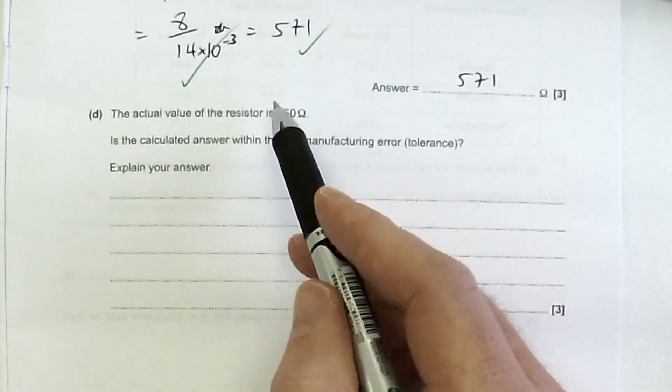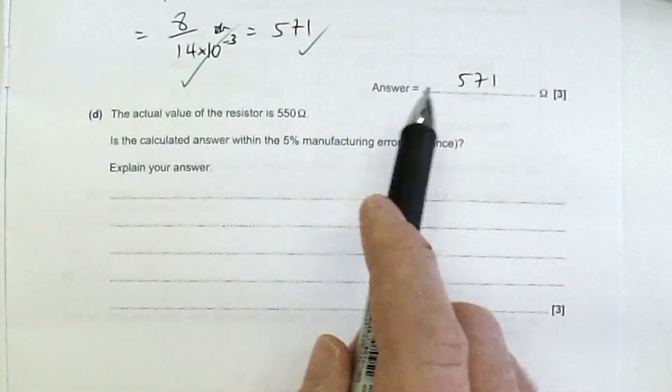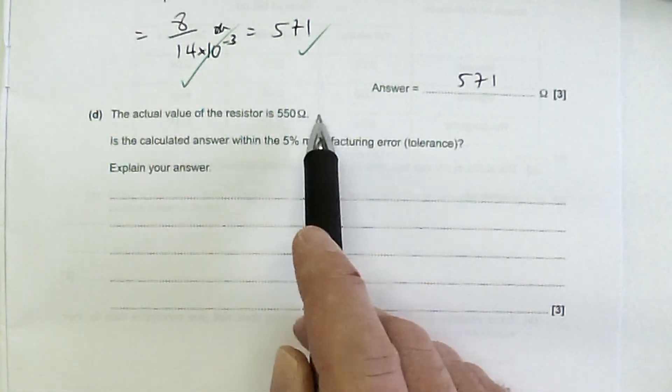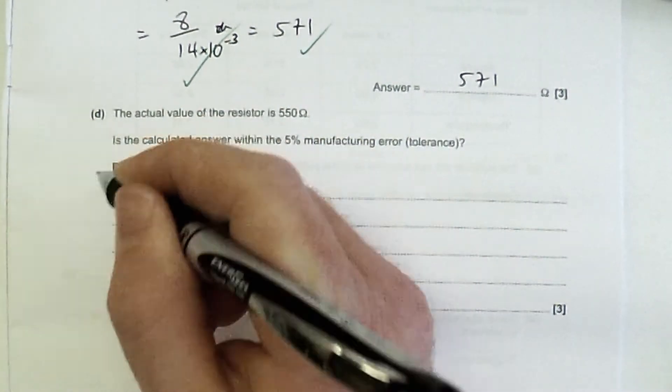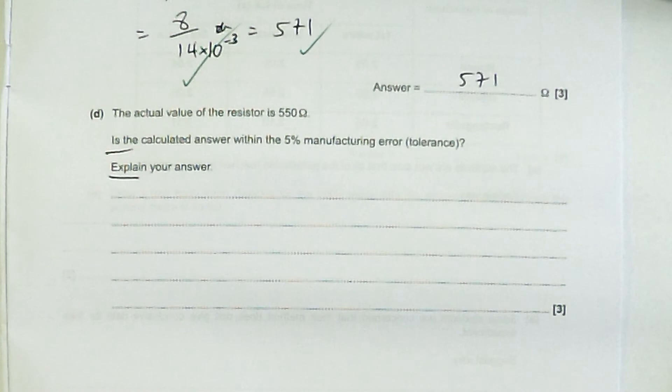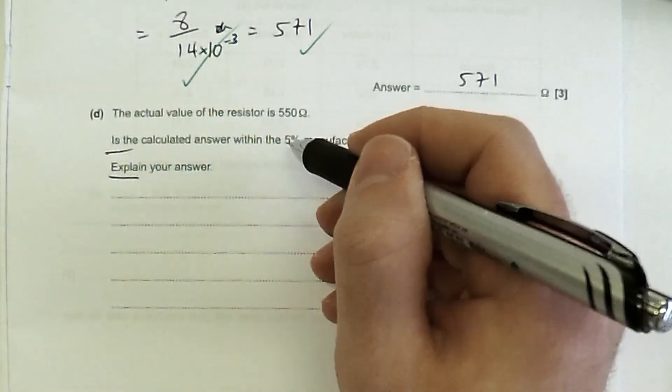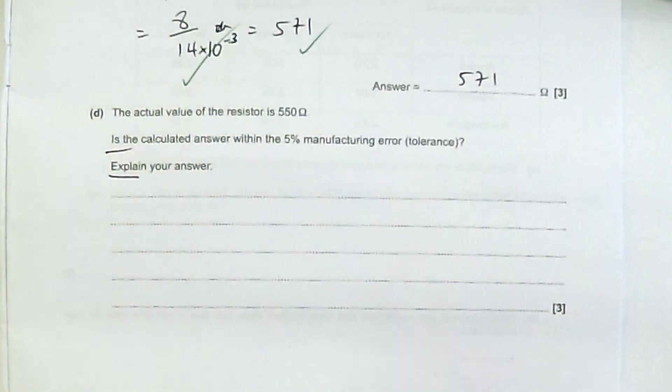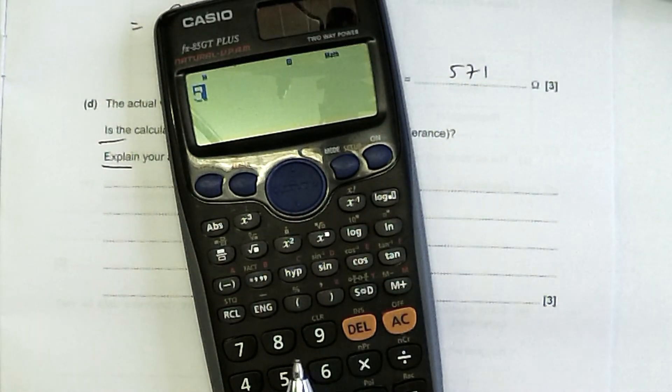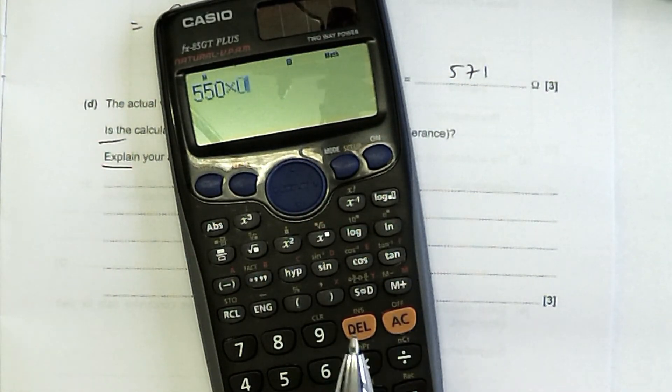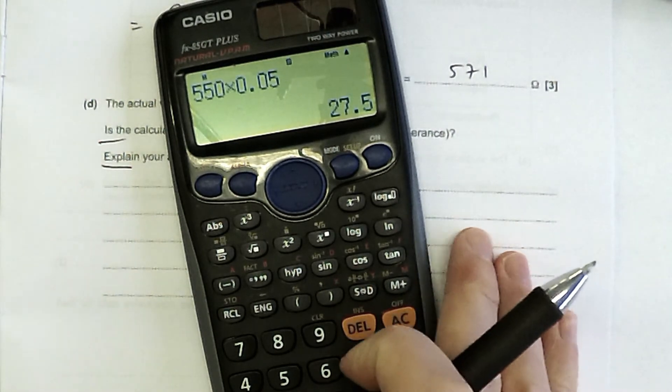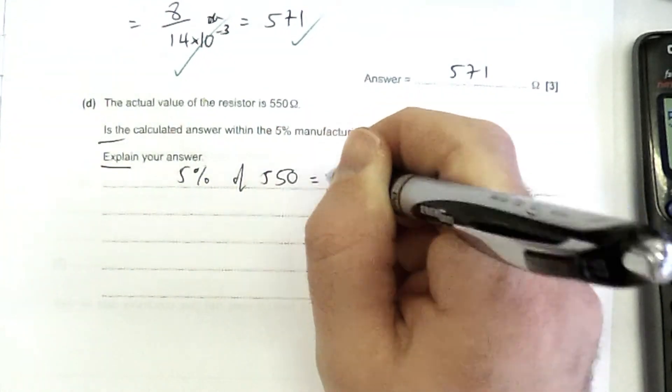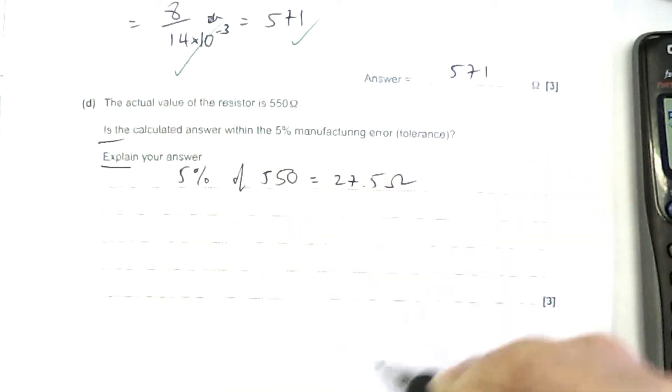So this is, in other words, the manufacturer's stated value of the resistor. This is what we've measured experimentally. So have they done what they've stated, 5% possible tolerance from this? And you have to explain your answer. So you first have to work out, is it? And then you have to explain it. Well, how are you going to work that out? Well, it's like saying, well, what's the upper bound of this or the lower bound of that? So in other words, we need to work out 5% of that. So how would you work out 5% of that? You would just do 550 times 0.05. 27.5. So 5% of 550 is 27.5 ohms.